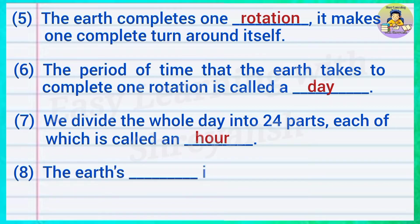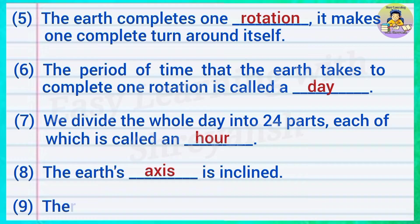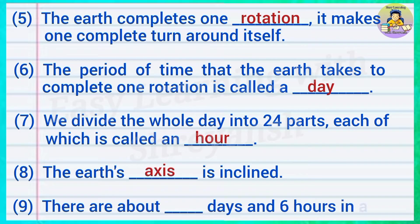Eight — the earth's — is inclined — answer: axis. Nine — there are about — days and 6 hours in a year — answer: 365.